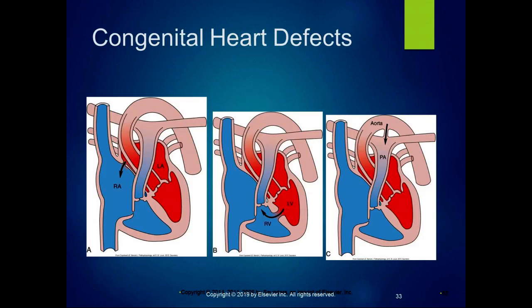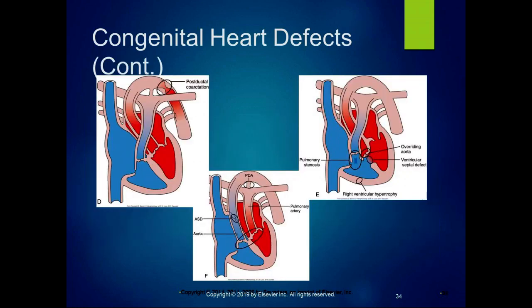There is a diagram from the book that shows different defects. Whether the shunt is right-to-left or left-to-right determines whether you're going to result in cyanosis. With small defects, they're often asymptomatic other than the presence of a heart murmur, and a lot of times that is not detected until later in life. Many people can go throughout their whole life and not know they have a congenital heart defect until someone is auscultating their heart and notices a murmur. It can be very asymptomatic and not serious if it's a very small defect.